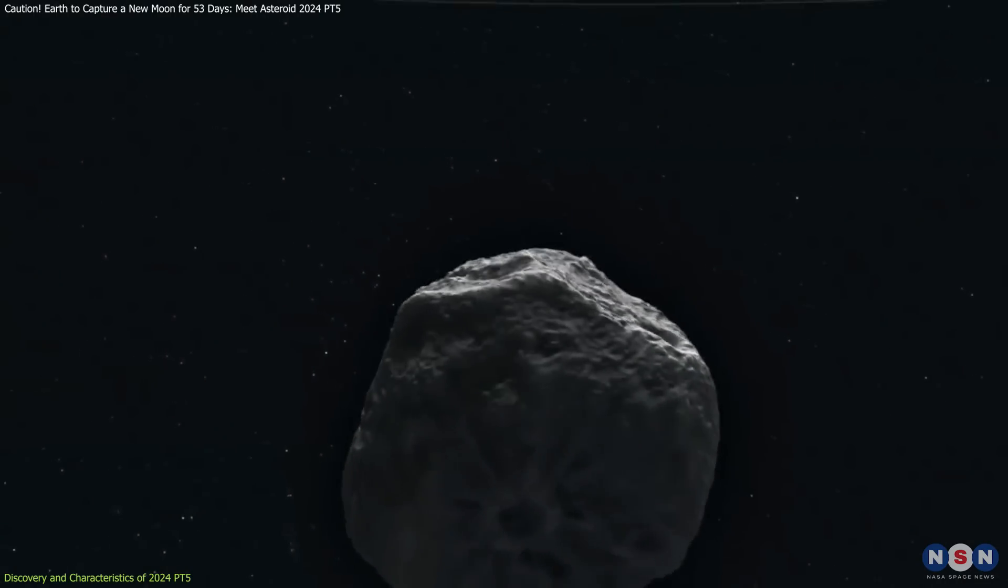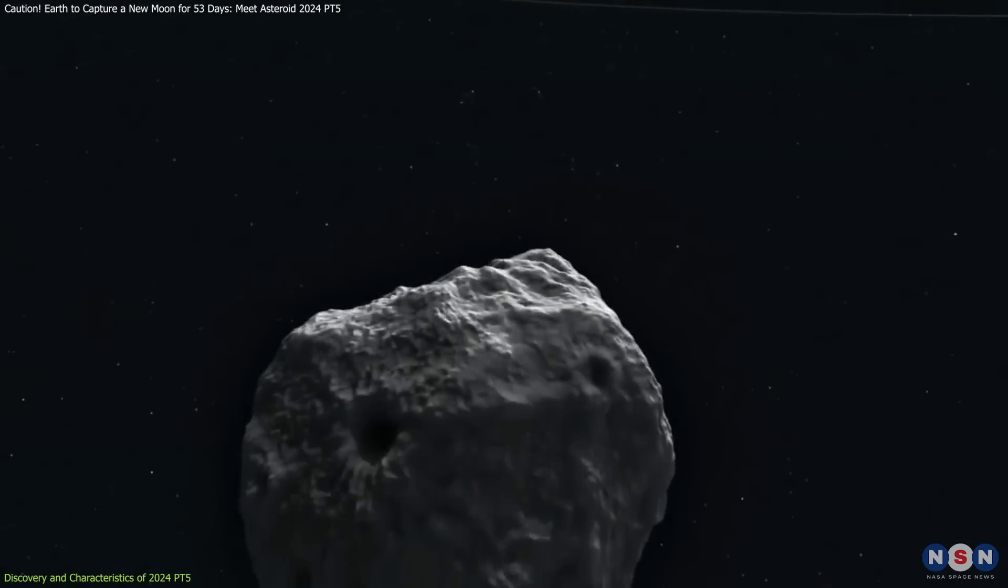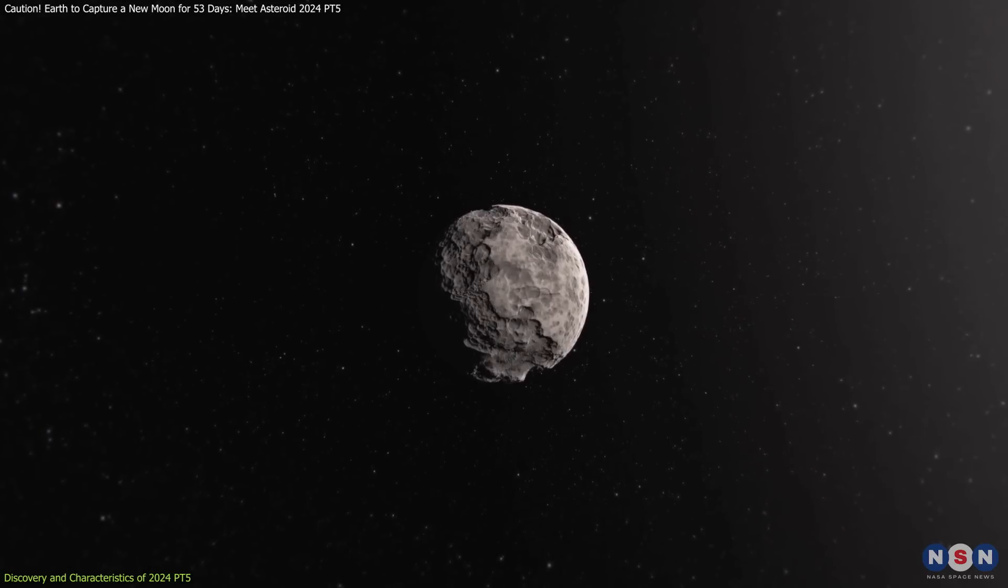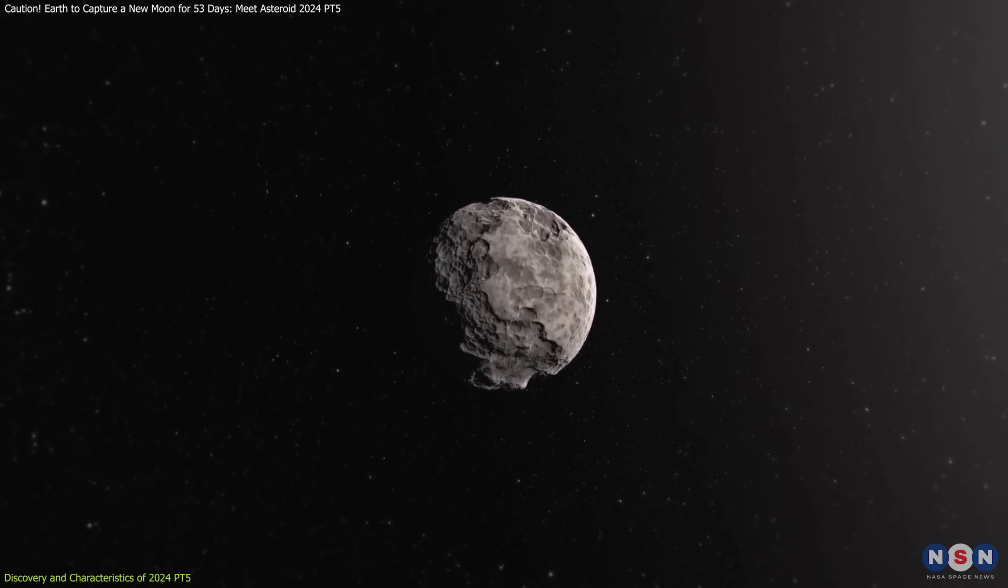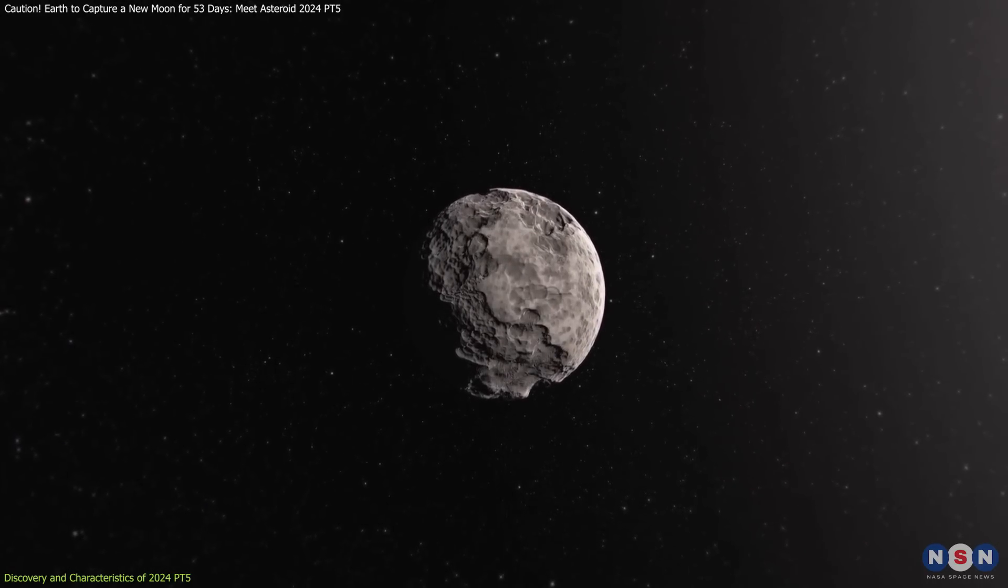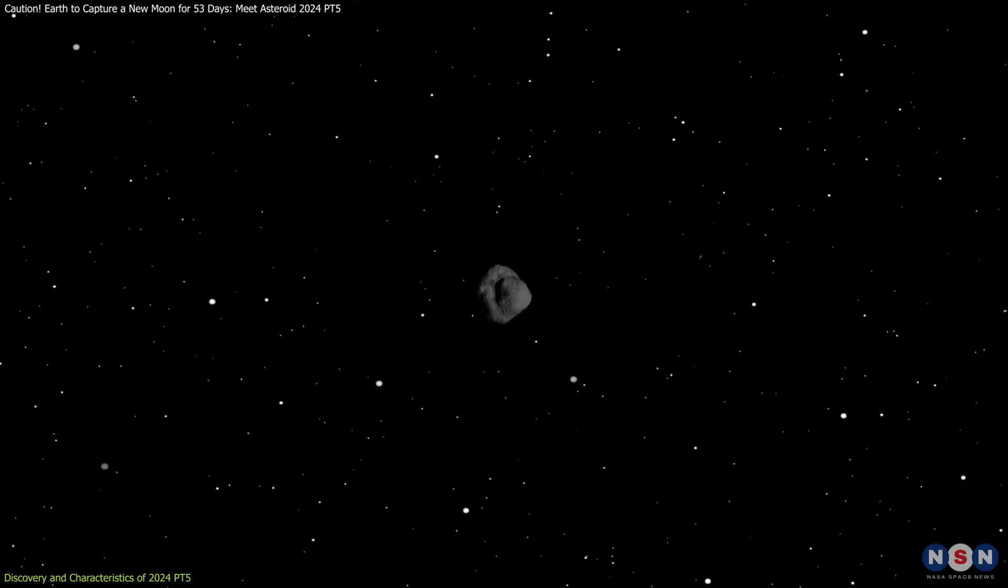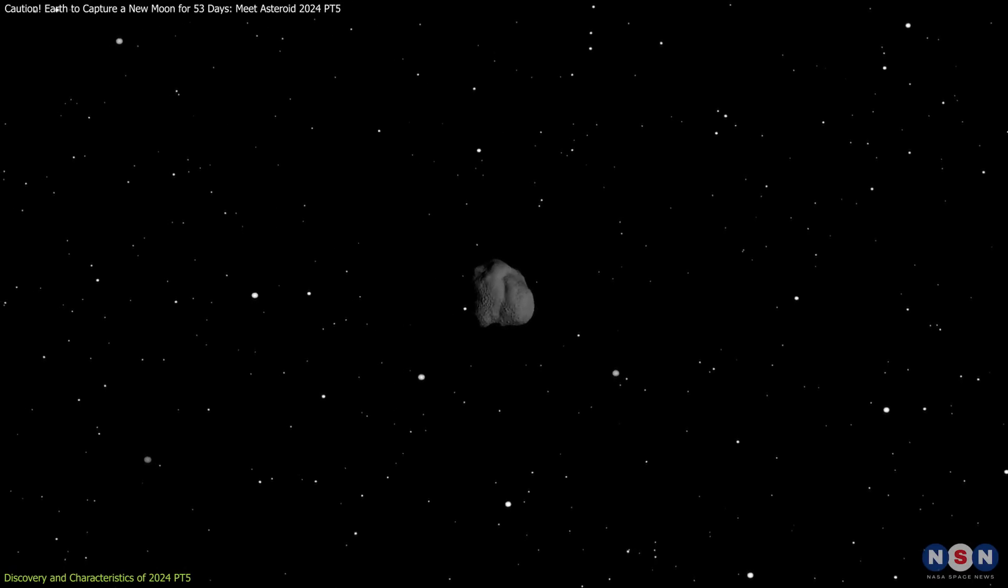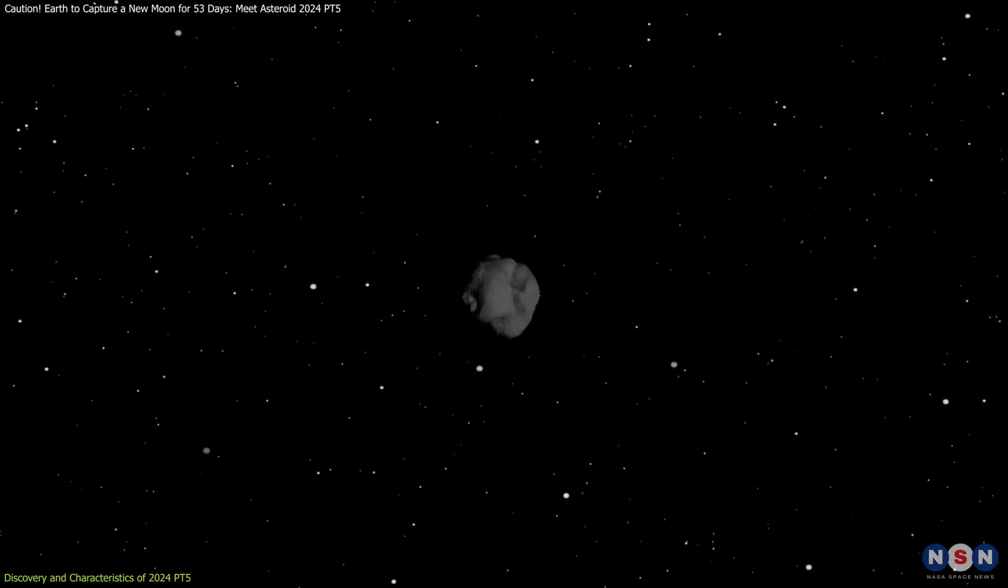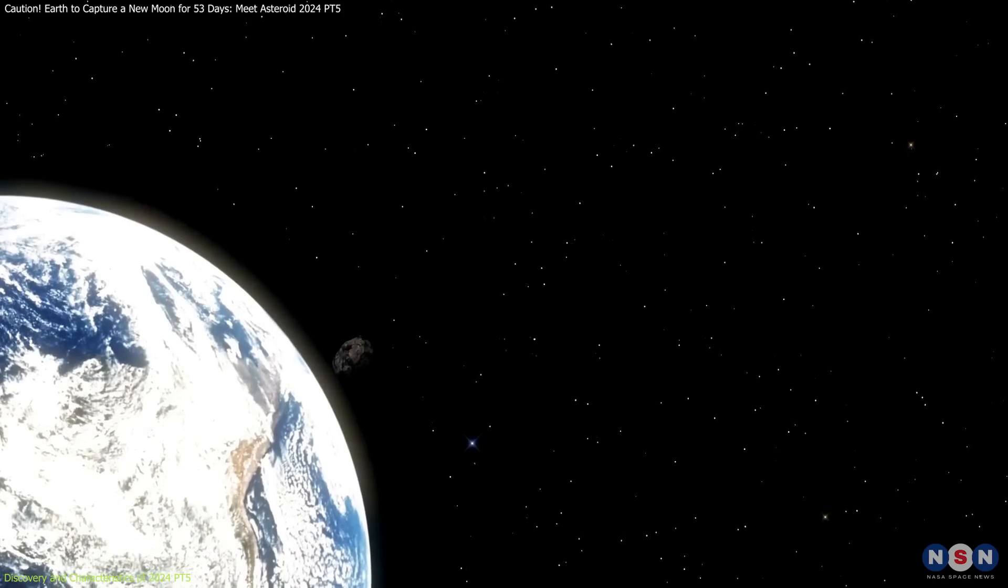What makes it particularly interesting is its size and trajectory. At just 10 meters across, it is relatively tiny compared to the larger asteroids that often make headlines. However, it is precisely this small size that makes it more susceptible to being captured by Earth's gravity temporarily.